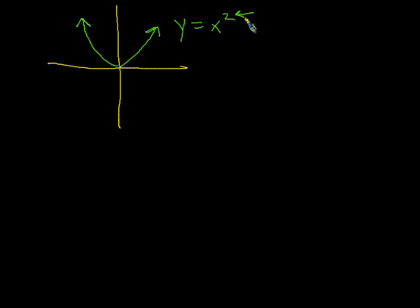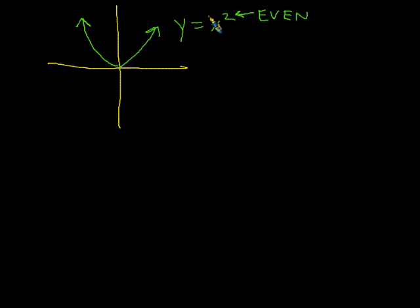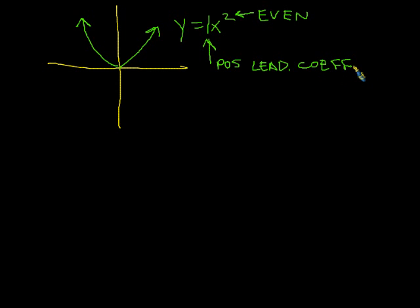This is known as a second degree polynomial because the highest power of any variable is two. It's also known as an even degree polynomial because the highest power of any variable is an even number. And because we have a positive one out in front, this has a positive leading coefficient, and because of that positive leading coefficient, we end up getting a graph that looks like a smiley face.